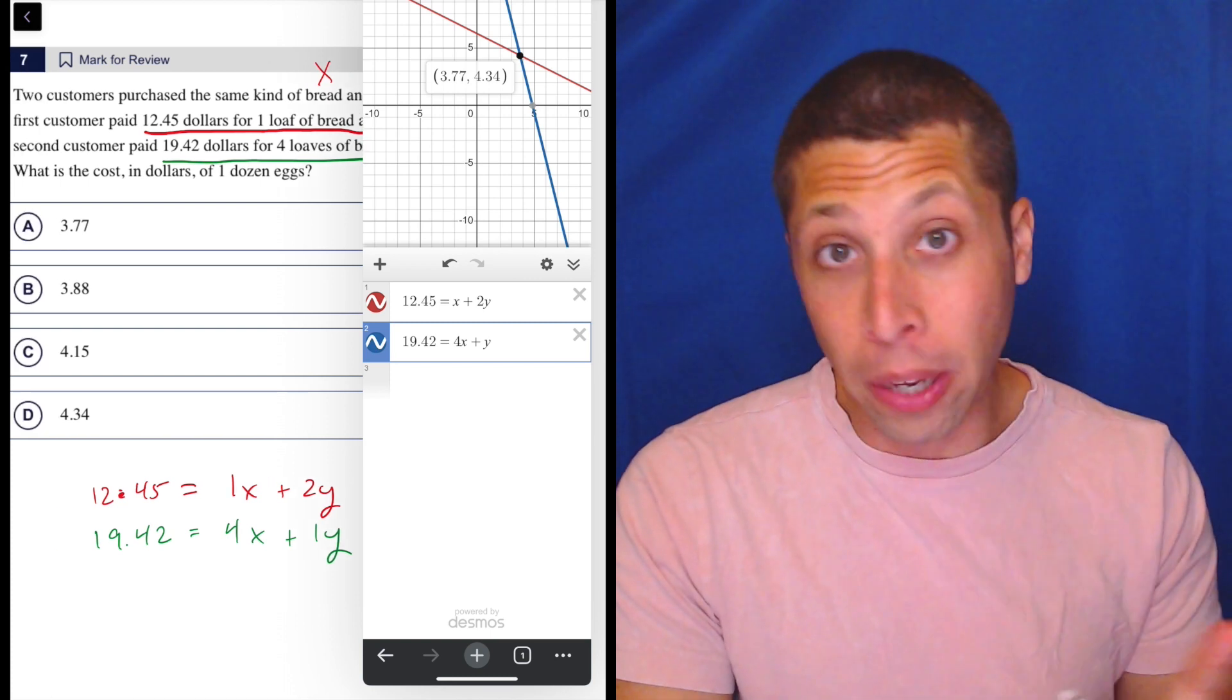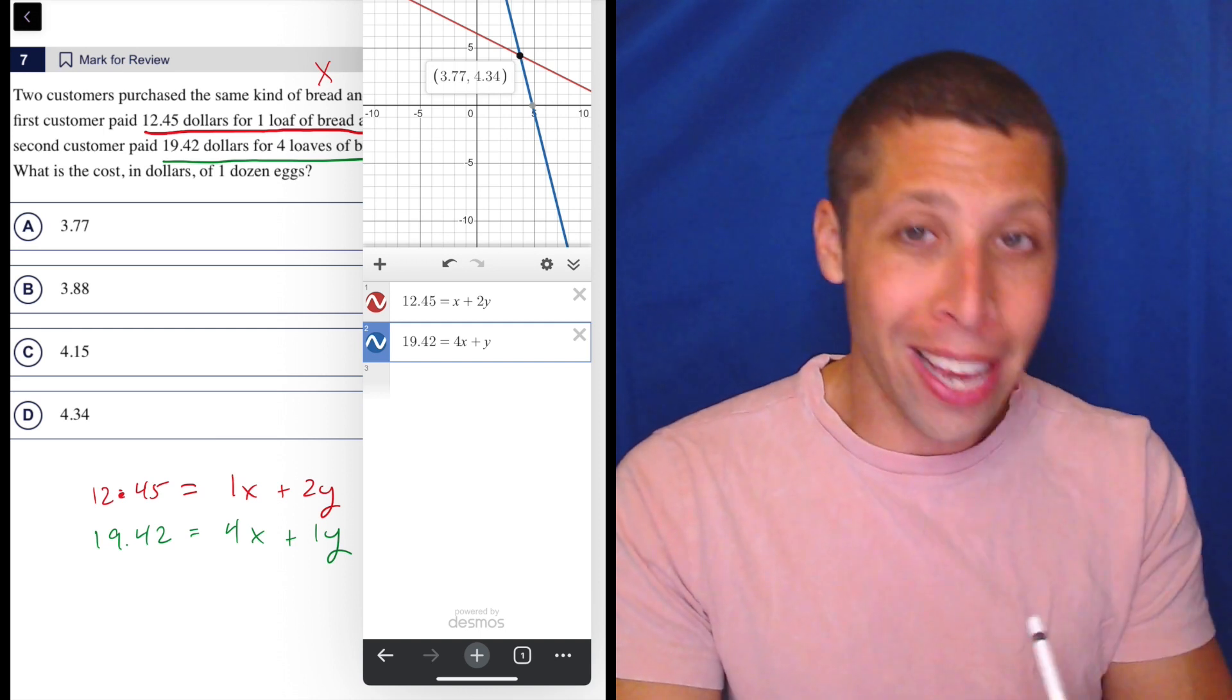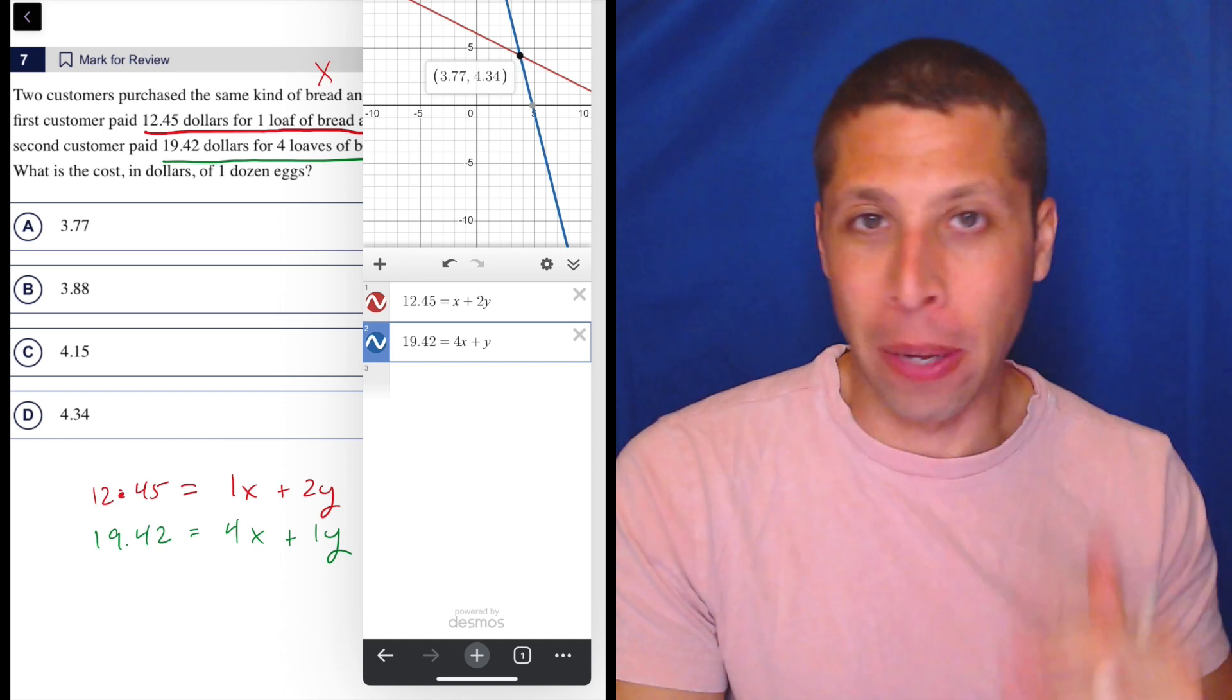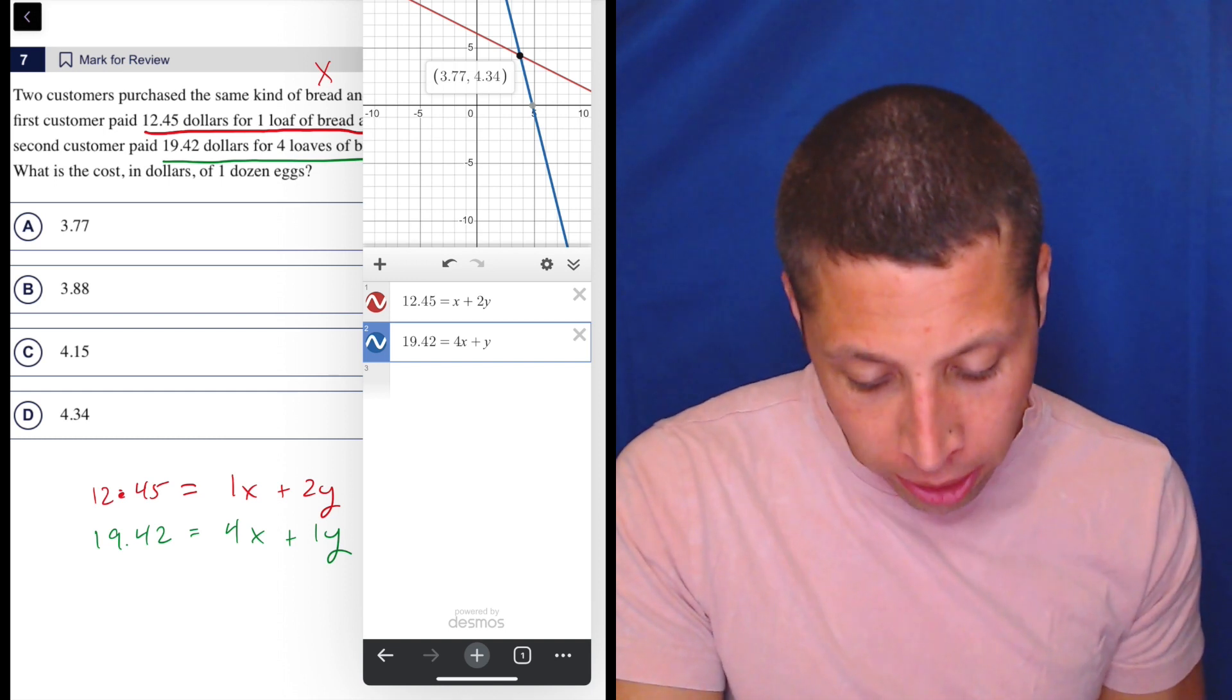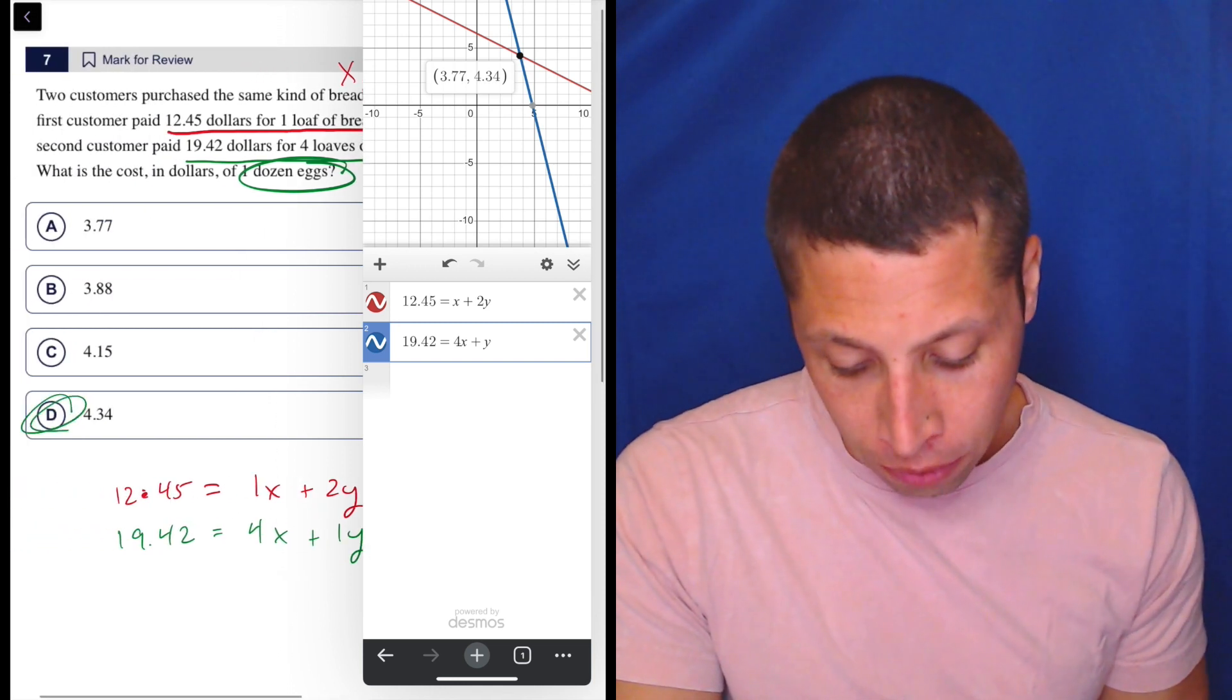So notice, whether you do this algebraically or not, you're going to have the same problem. They're going to give you in the answer choices both the X and the Y coordinates, hoping that you just picked the wrong one. But what did they want, right? They wanted the cost of eggs. So we said eggs were Y. So that's 4.34, right?